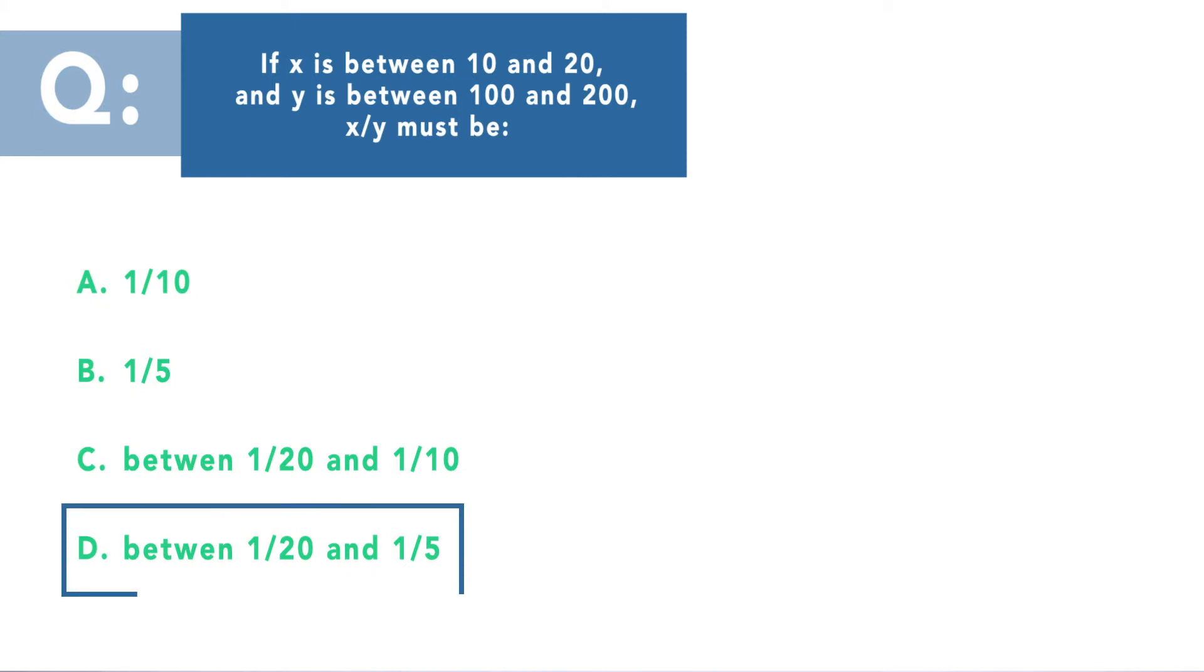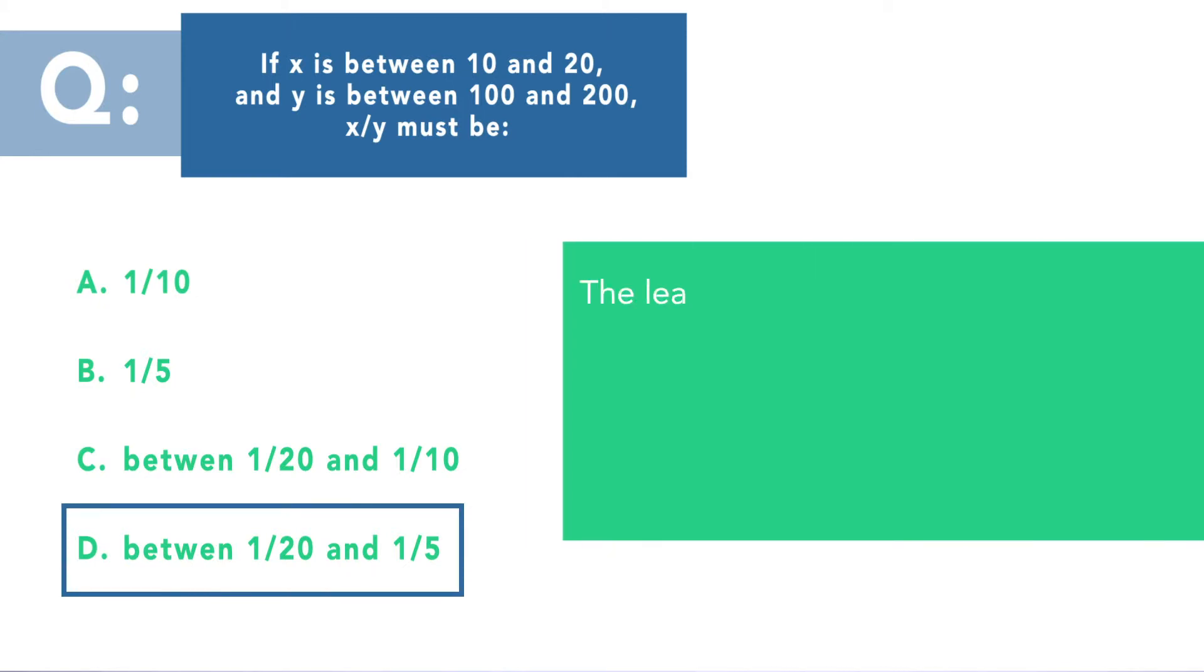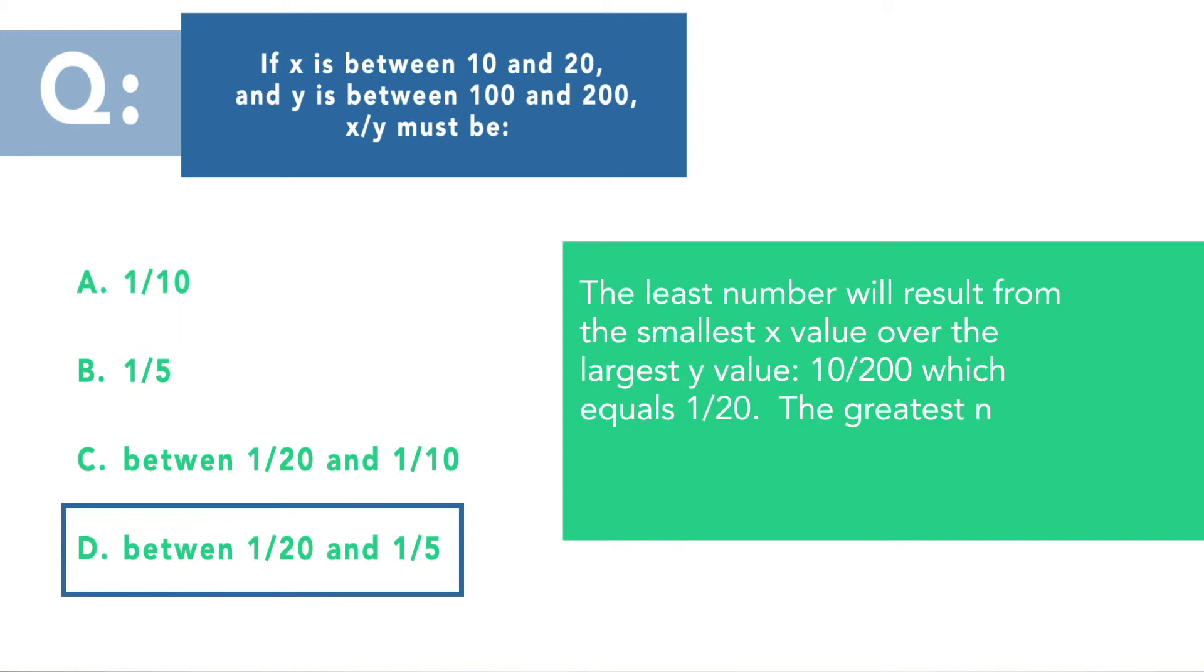The correct answer is between 1 twentieth and 1 fifth. The least number will result from the smallest x value over the largest y value. So this will be 10 over 200, which equals 1 twentieth. The greatest number will result from the largest x value over the smallest y value to be 20 over 100, which equals 1 fifth. Let's move on to the third question.